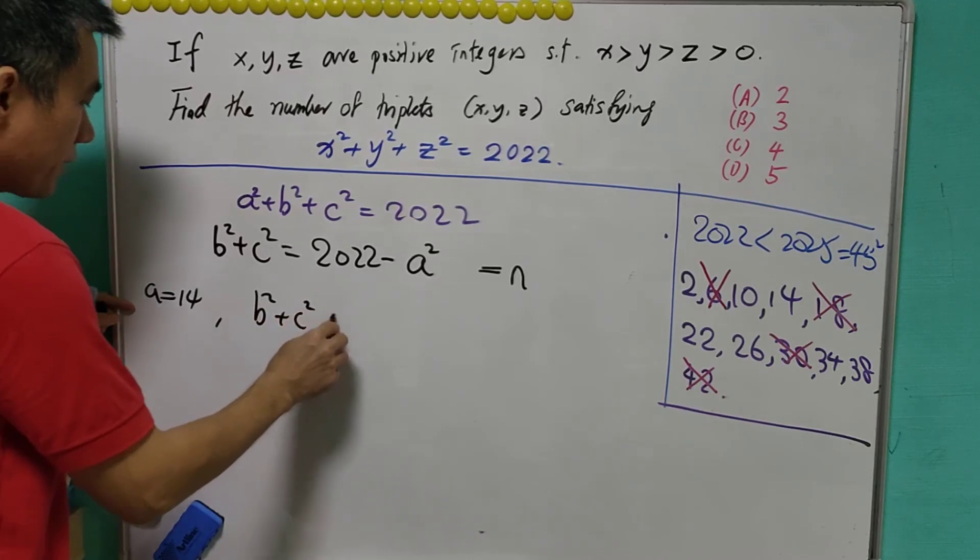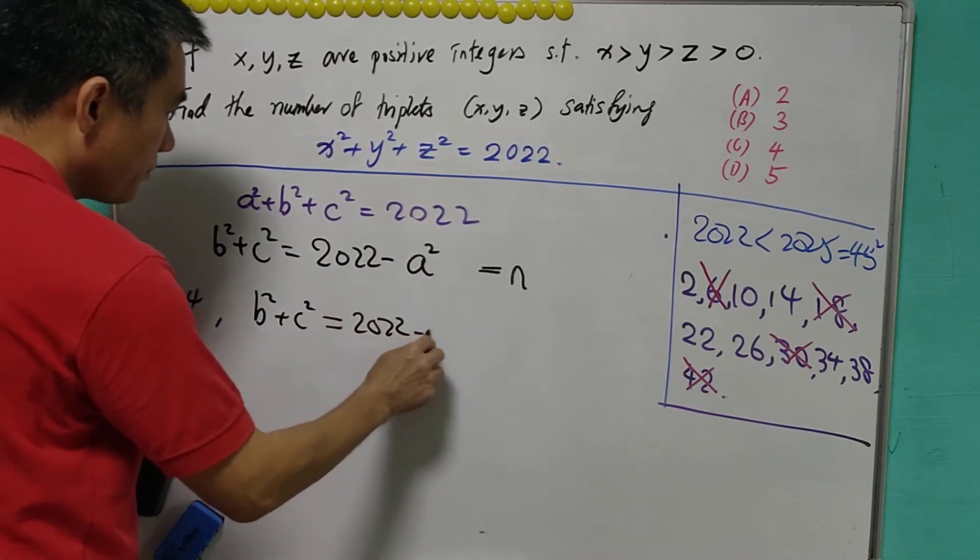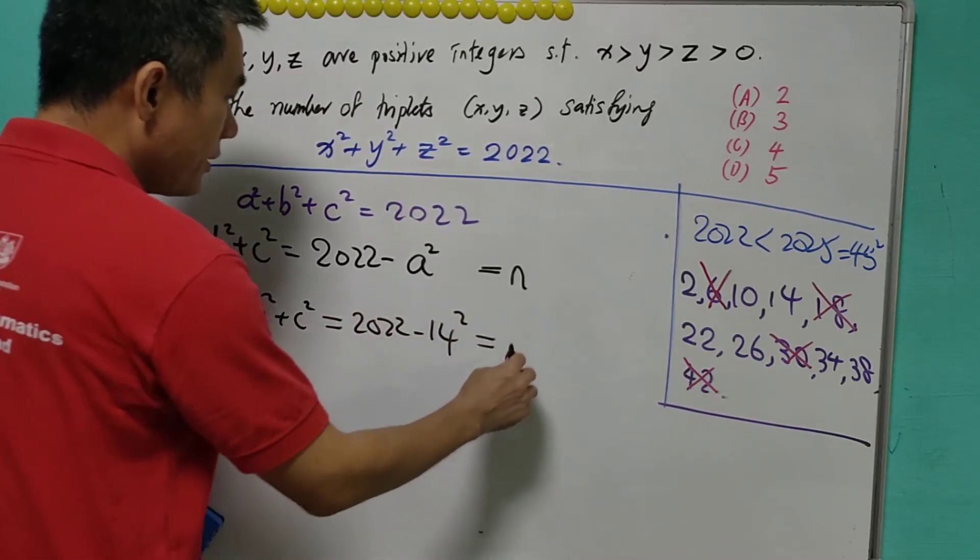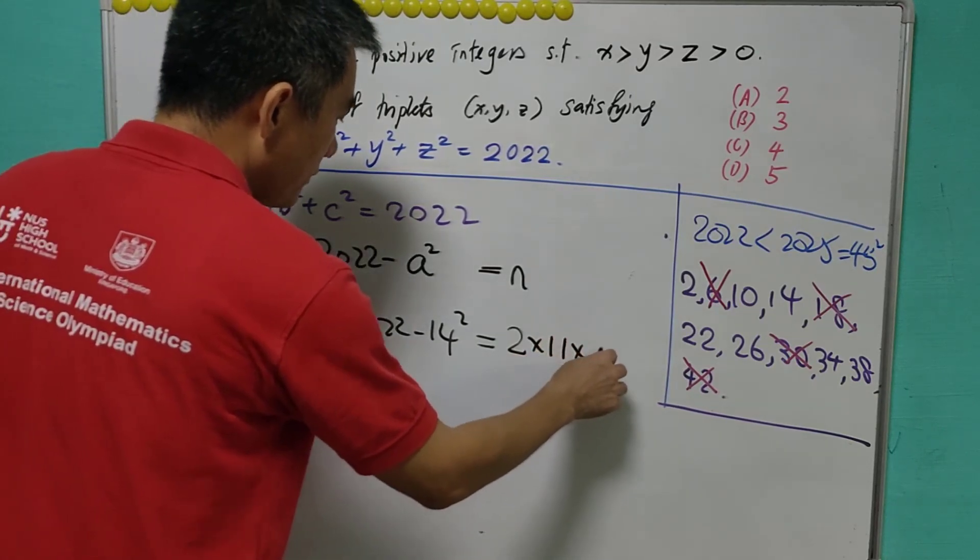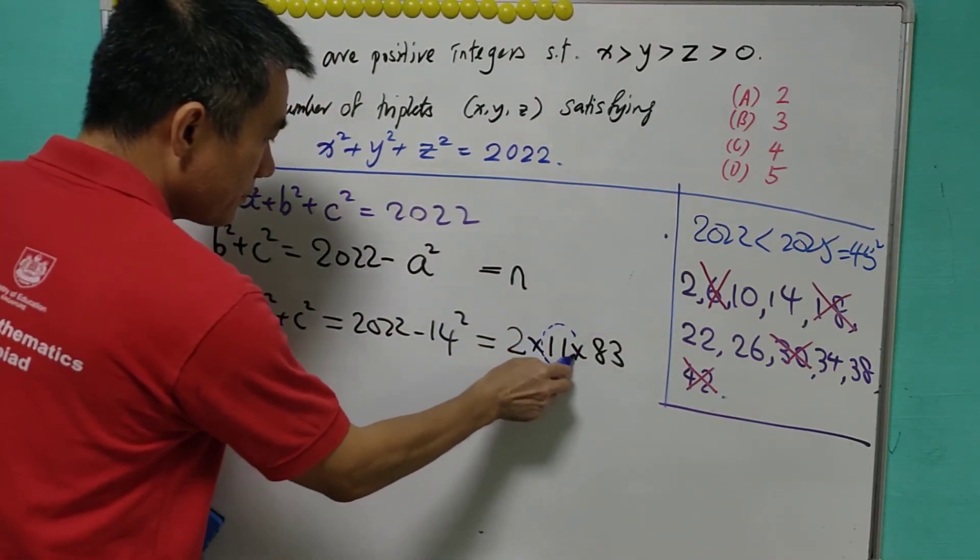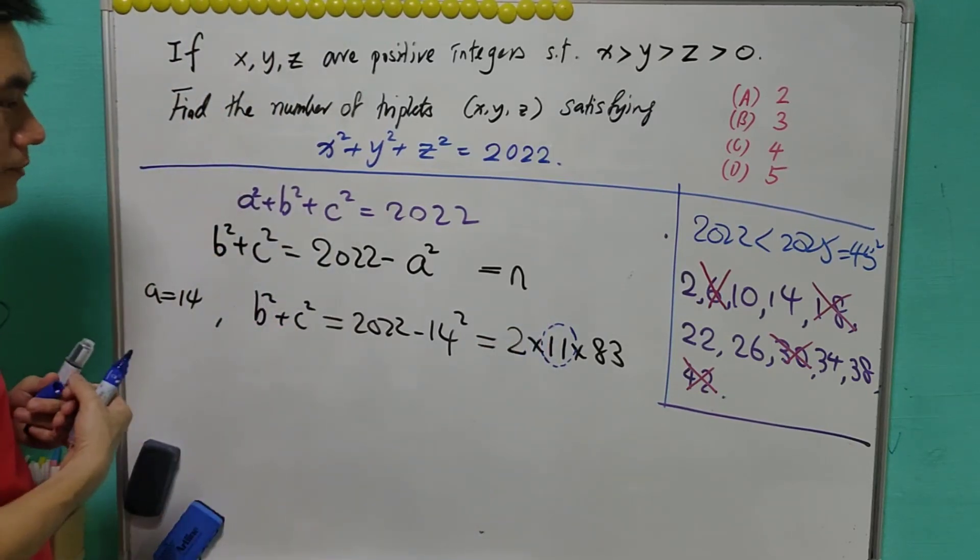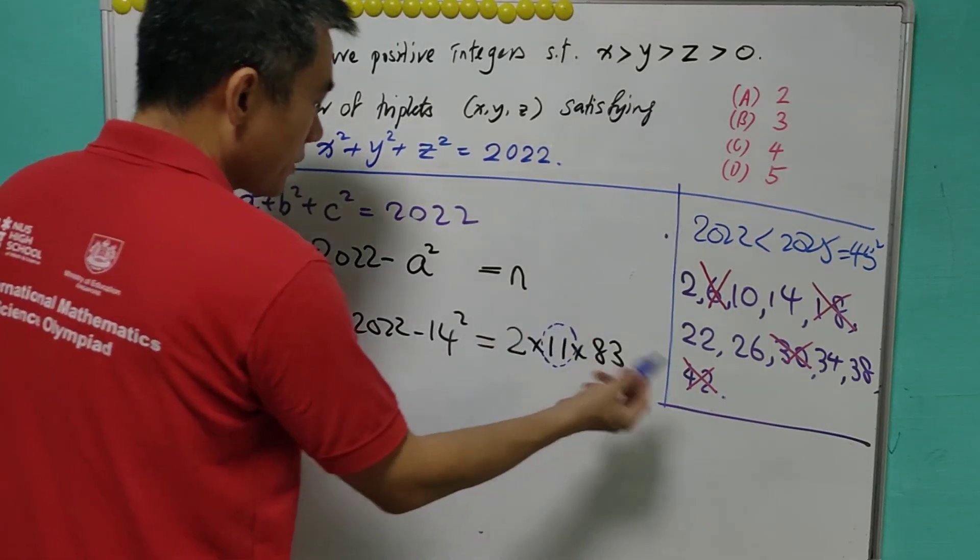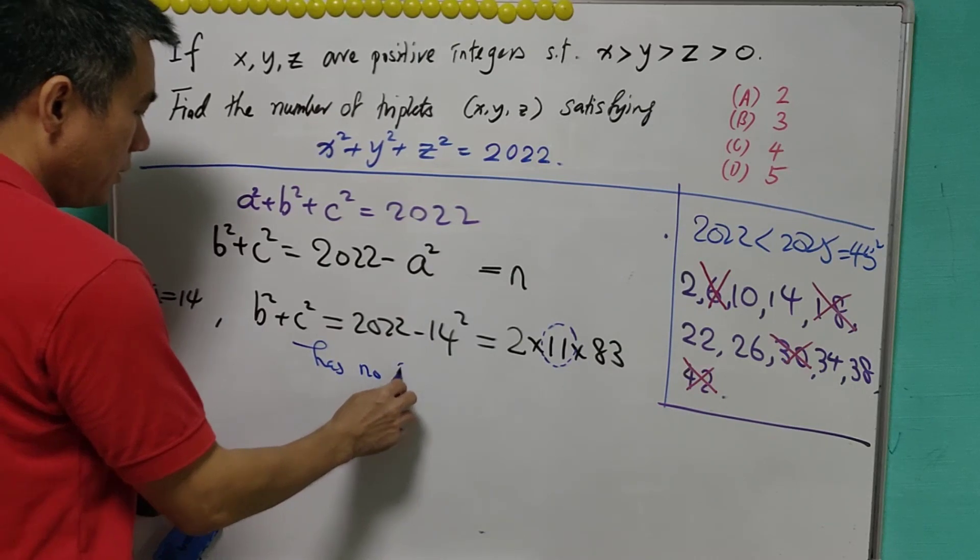When a equals to 14, b square plus c square is 2022 minus 14 square. After calculation, this is 2, 11, and 83. And 11 is congruent to 3 mod 4, and the power is 1. So it has no integer solution.